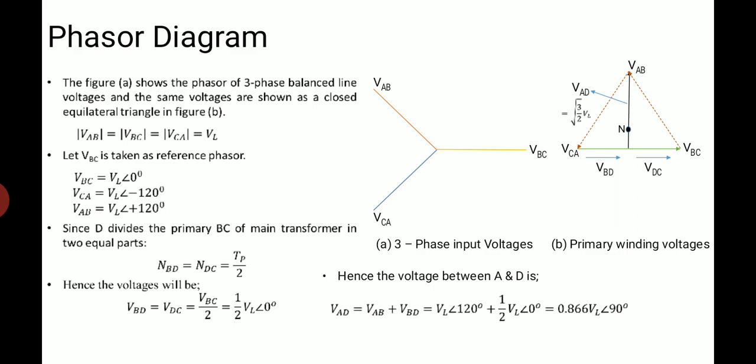Now, as D divides the primary BC of main transformer in two equal parts, number of turns at B terminal and D terminal and the number of turns of coil DC is TP by 2. Hence, the voltages will be VBD is equal to VDC is equal to VBC by 2 which is equals to VL by 2 angle 0 degree.